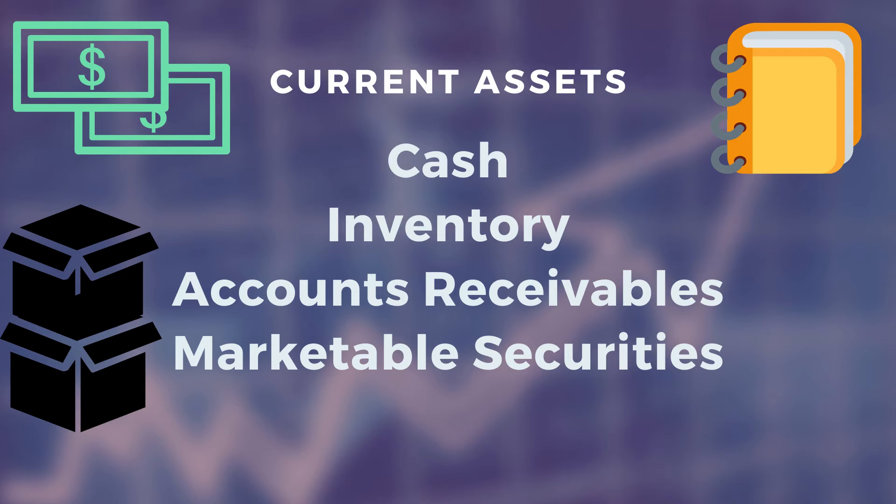A current asset is an asset used on a day-to-day basis, such as cash and similar things. Non-current assets are assets held in the long term, such as properties and similar things.